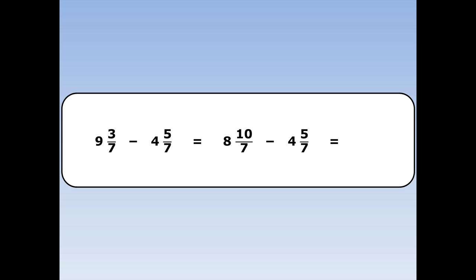And then I take away as normal. First I take away the whole numbers: 8 take away 4 is 4. Then I take away the fractions: 10 sevenths take away 5 sevenths is 5 sevenths. 4 and 5 sevenths is the final answer.